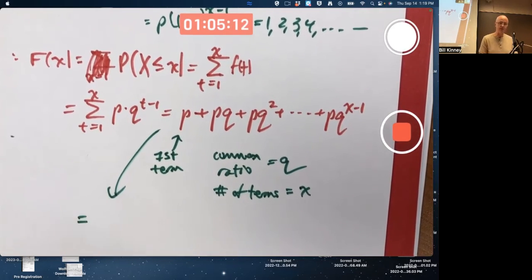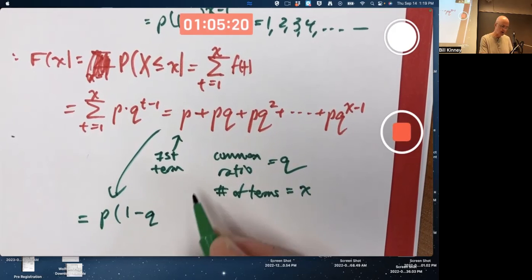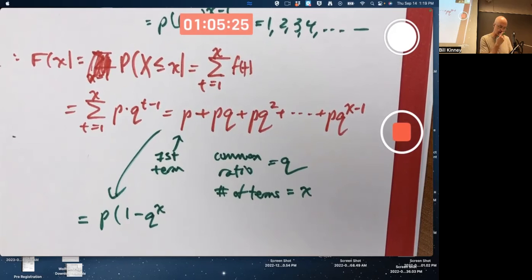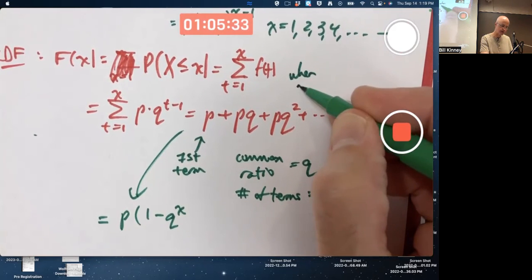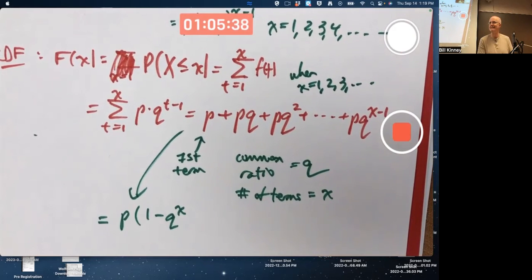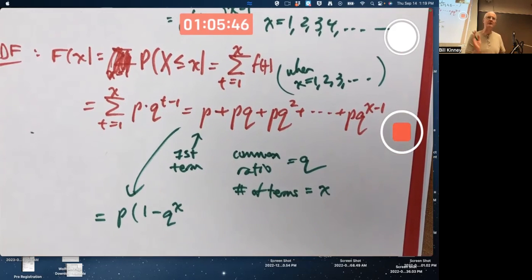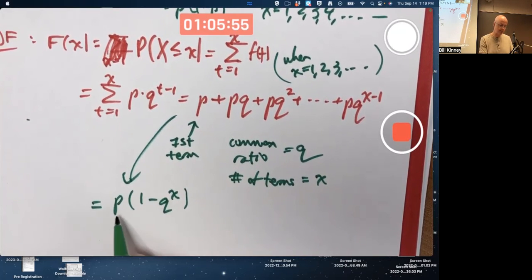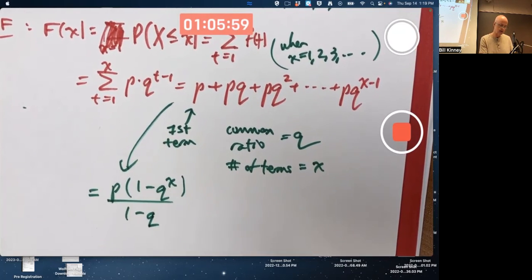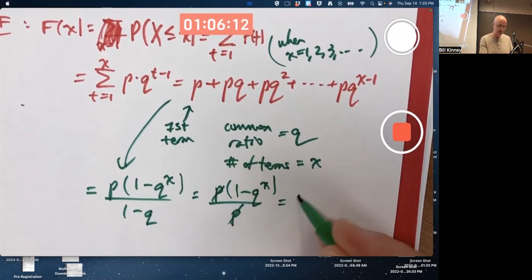And therefore, by the formula for the sum of a finite geometric series, you take the first term, multiply it by one minus the common ratio to the X power here. I guess I'm assuming X is a whole number when I write this, a positive integer. If X were not a positive integer, I'd have to use the greatest integer in X. Forgot to mention that. For simplicity, let's assume X is a whole number. You do the first term times one minus the common ratio to the power of the number of terms, over one minus the common ratio. If Q is one minus P, then one minus Q is P, and the P is divided out, and you're left with one minus Q to the X.